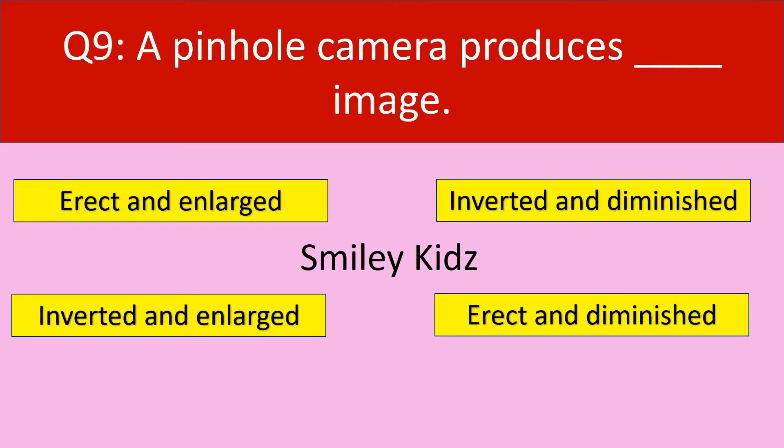Question number 9. A pin hole camera produces dash image. Your options are: Erect and Enlarged, Inverted and Diminished, Inverted and Enlarged, Erect and Diminished.